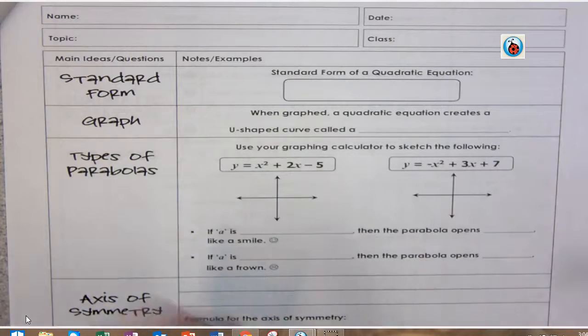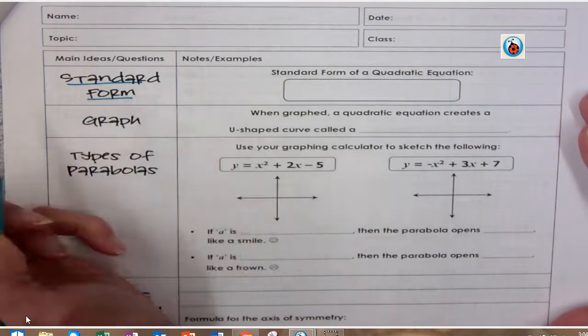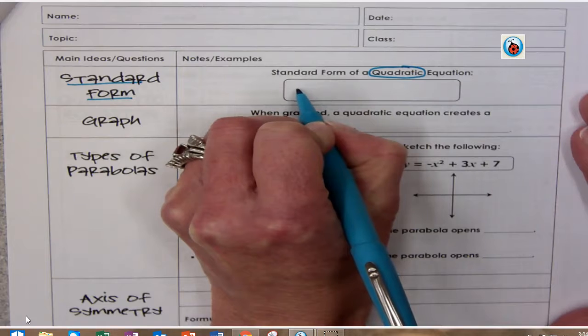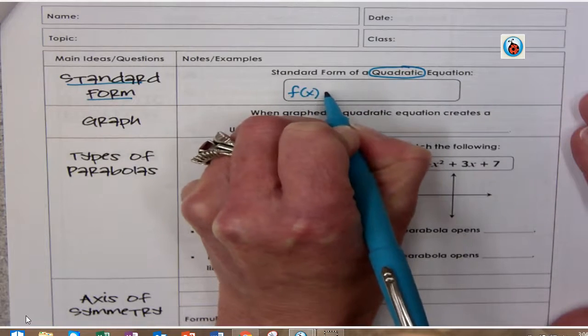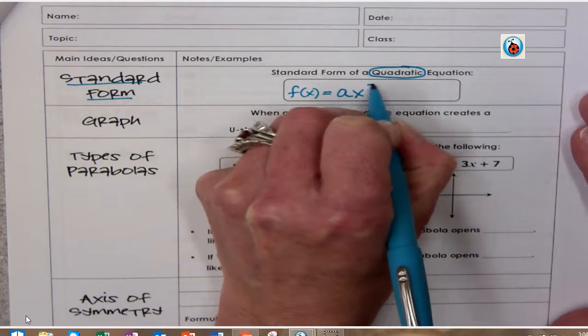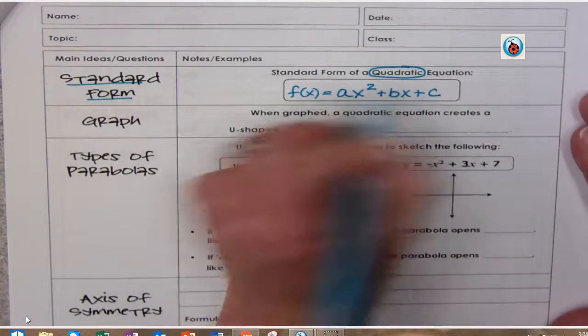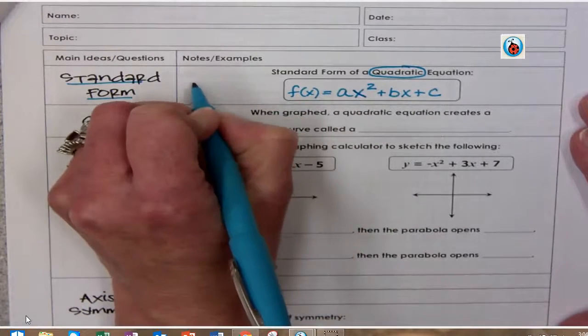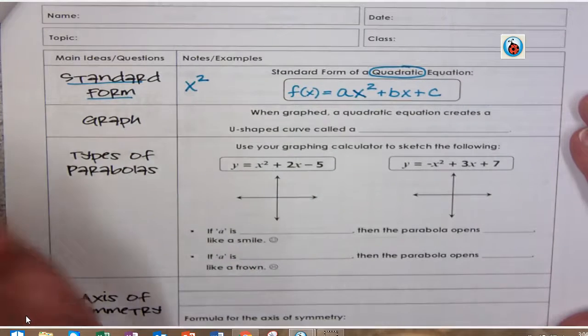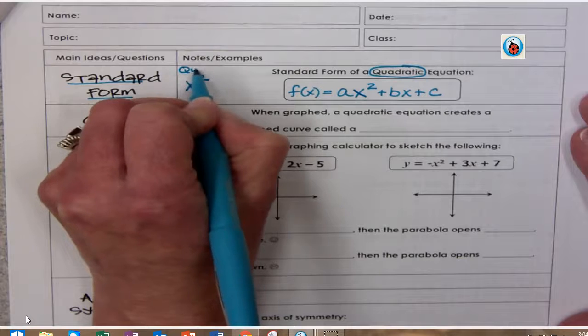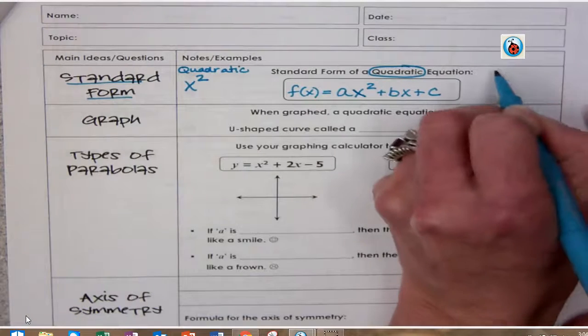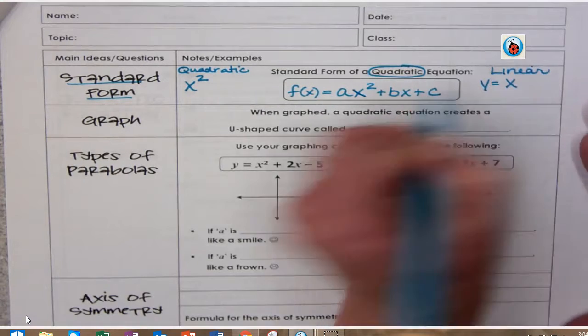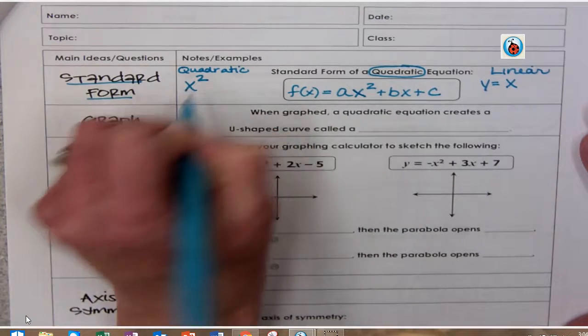So we have talked about the standard form of an equation. The standard form of a quadratic equation is going to look like this: f(x) or y equals ax squared plus bx plus c. And what makes it a quadratic equation, there's two things. Number one, the x squared is different than what we've seen. We've just been doing linear equations. This is going to be what makes it quadratic.